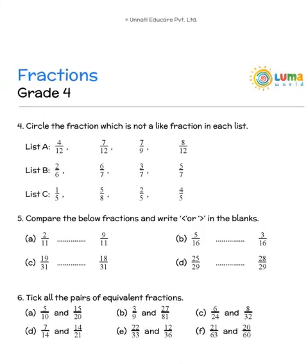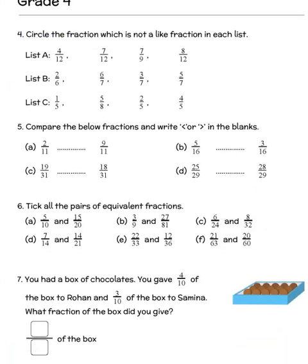The next one circle the fraction which is not a like fraction. We notice that like fractions are those which have the same denominator. We see that 7 by 9 is different and in the next list B we have 2 by 6 which is different because the denominator is not 7. And in list C we find that 5 by 8 does not have the denominator 5 which everything else has.